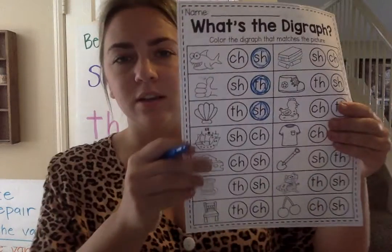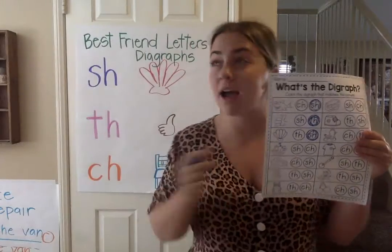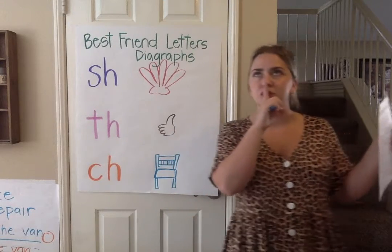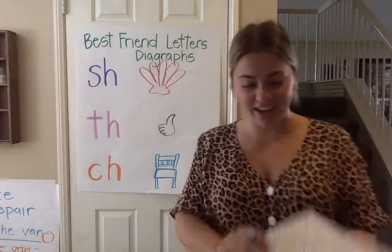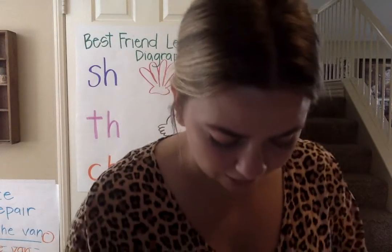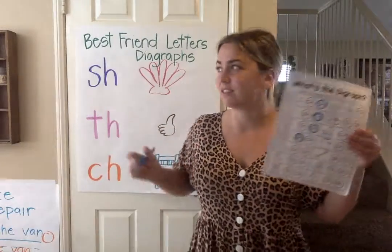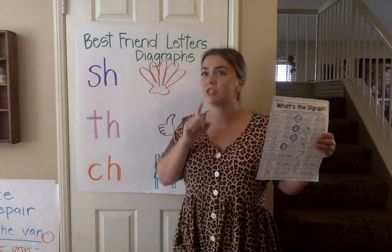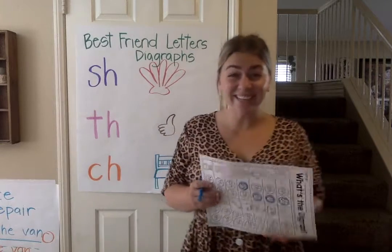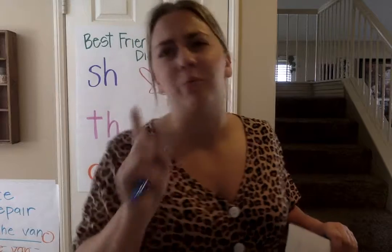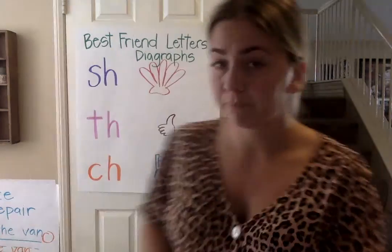What's the next picture? It's a shell. Does 'shell' start with 'shh'? It does — so easy! Circle the S and the H. Next is a picture of a ship, like pirates on a ship. Does 'ship' start with 'shh'? Yes — S and H. Good job! The last one is a picture of cheese. Does 'cheese' start with 'sh'? No. Does it start with 'th'? No. Does it start with 'ch'? It does! Say it with me: cheese — ch! Good job!